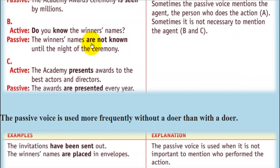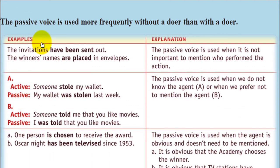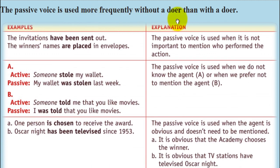That's why sometimes it's not necessary to mention the doer of the action. Example C. Active: 'The academy presents awards to the best actors and directors.' Passive: 'The awards are presented every year' — here it's not necessary to mention the doer of the action. The passive voice is used more frequently without a doer than with a doer.